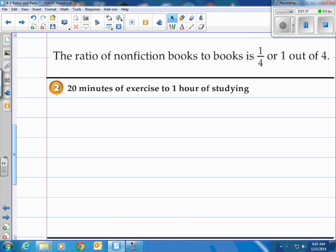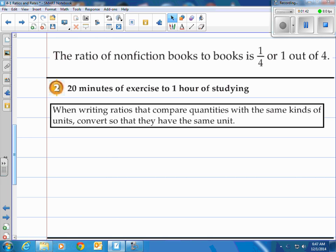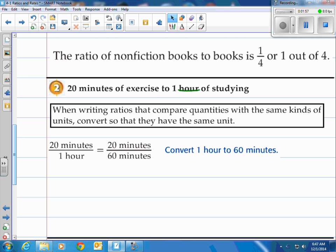How about number two here: twenty minutes of exercise to one hour of studying. Now take a look at this because we've got minutes and hours. When writing ratios that compare quantities with the same kinds of units, convert so that they have the same units. What I find is if you take the larger unit like hours here and change that to minutes, it seems to work out best. So they take 20 minutes over one hour, then convert the hour to sixty minutes. Now twenty minutes to sixty minutes can then be reduced to one third.